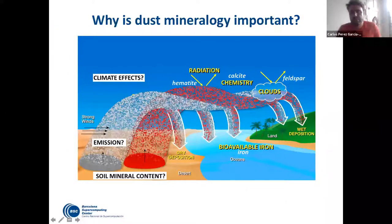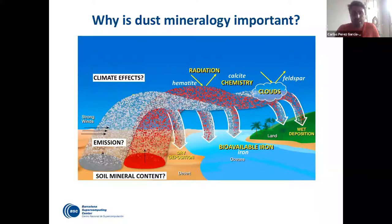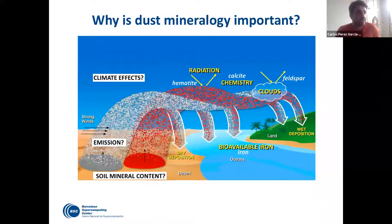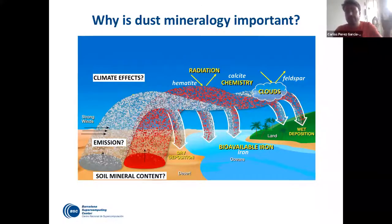So why is dust mineralogy important? In reality, dust is composed of a myriad of minerals, and we know that the mineral composition of the arid sources changes spatially. We don't have a very clear idea of how much it changes, because most of our estimates are based on a few soil samples across the world. Very soon we will have better estimates. We care about it because depending on the type of mineral, each mineral has different properties that affect different aspects of climate differently. Hematite and goethite — iron oxides — are key minerals for direct radiative effects, as they strongly absorb in the shortwave. We also have other minerals in the longwave, like calcite and quartz, that are especially absorbing at those wavelengths.